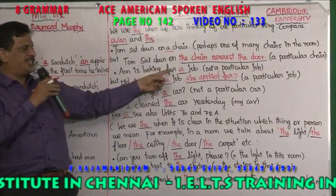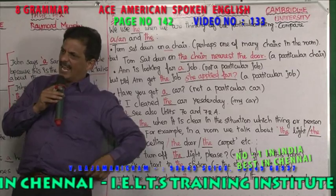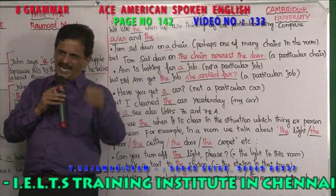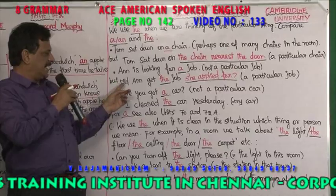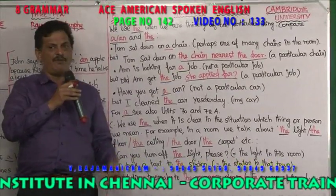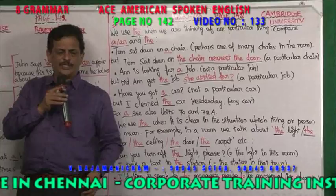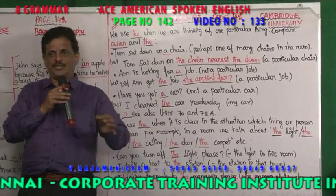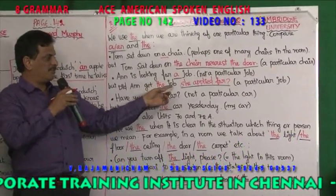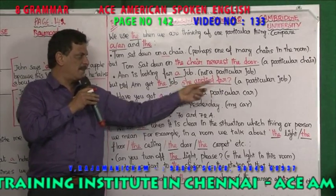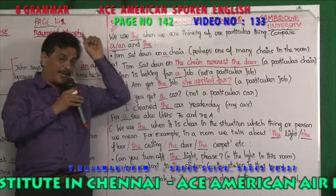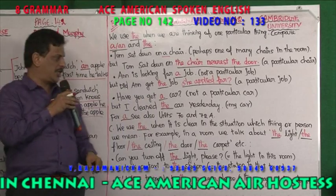Ann is looking for a job — any job, not a particular job. But did Ann get the job she applied for? 'The job' means the particular job which she has applied for — maybe an HR manager post she has applied for. 'A job' means not a particular job; 'the job' means a particular job.